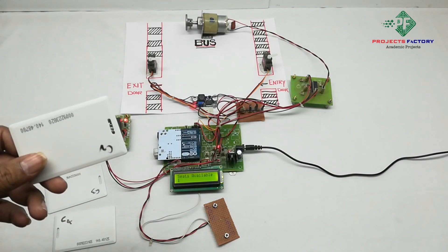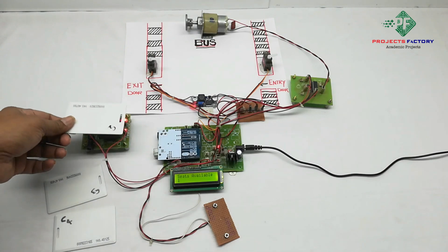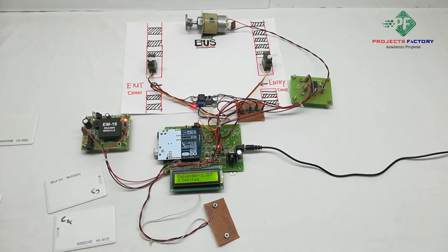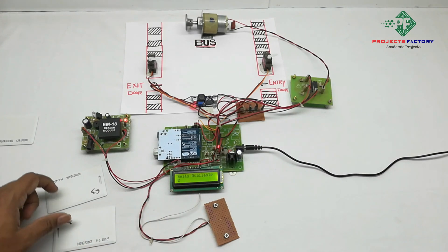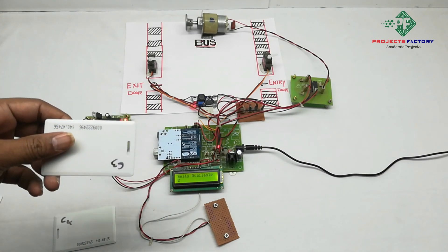At this stop we drop passenger 2. We can see seats availability 2.